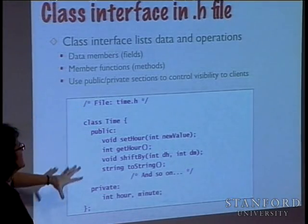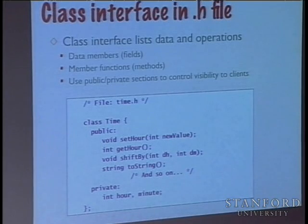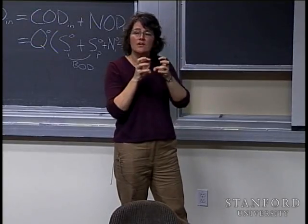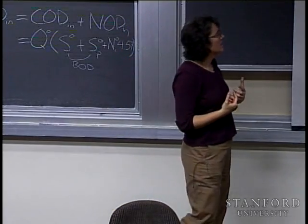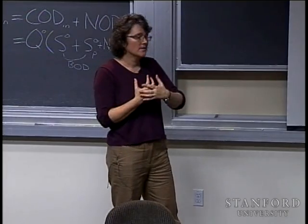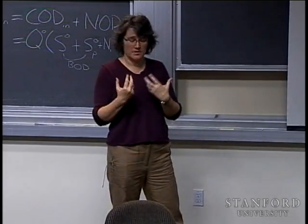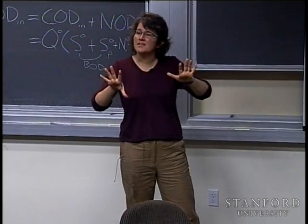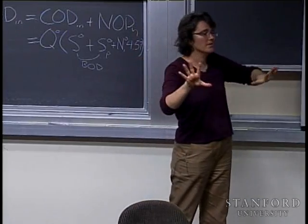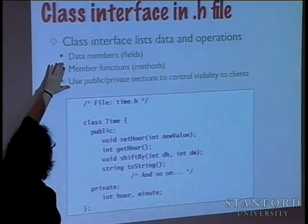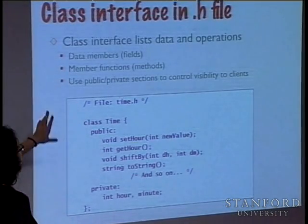Unlike Java, C++ actually separates the class definition into two files: the .h file says what the class provides, and the .cpp says how it works. In Java these were not separated. One advantage is that what you give to users of your code doesn't contain implementation details. One disadvantage is you must keep the two files in sync — if you change a name in one place, you must change it in both.